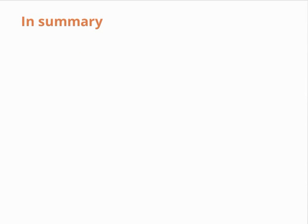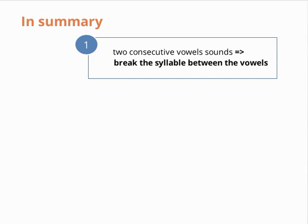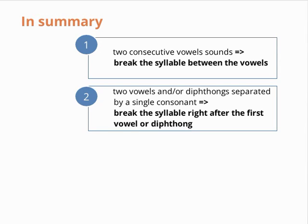So, just to recap, here are the four main points about syllable divisions. First, when there are two consecutive vowel sounds, break the syllable between the vowels. Two, when there are two vowels and/or diphthongs separated by a single consonant, break the syllable right after the first vowel or diphthong — the consonant joins the second syllable.